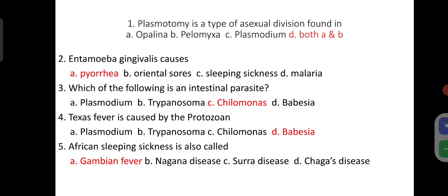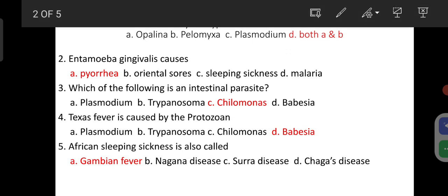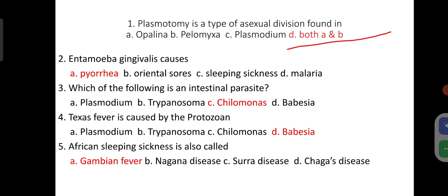Plasmotomy is a type of asexual division found in Opalina and Pilomyxa. So both A and B are the answers. In both Opalina and Pilomyxa, Plasmotomy is found. Plasmotomy is a type of asexual division.